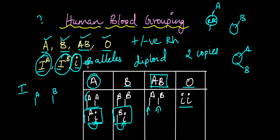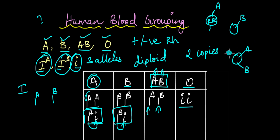This is again a deviation from Mendel's laws of inheritance, because in heterozygous individuals normally only the dominant phenotype is expressed — only one phenotype. But here we have two phenotypes being expressed simultaneously because both are dominant, which is an example of codominance.